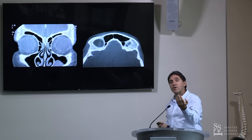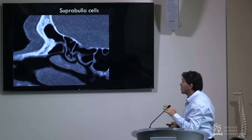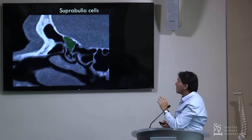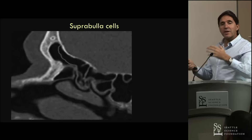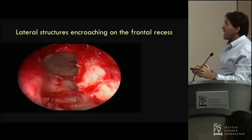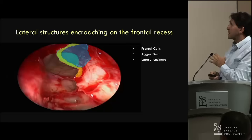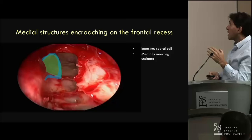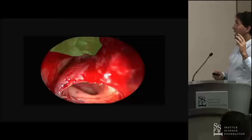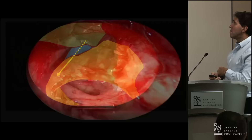The supraorbital ethmoid air cell pneumatizes from backwards to forwards, so your frontal drainage pathway is anterior to it - you need to be aware of that. The suprabullous cell: the bulla ethmoidalis attaches to the skull base. Your anterior ethmoid artery will be about there. Variable pneumatization can go up the skull base and as it pneumatizes up the skull base it can narrow that frontal drainage pathway and lead to problems. You need to be aware of it and remove the whole cell using through-cutting frontal instrumentation. The medial structures are really just an inter-sinus septal cell and the medially inserting uncinate process - very simple, easy to determine on your preoperative CT scan. Once you've identified those important structures and got your drainage pathway, remove all those structures out the way and you'll end up with a nice frontal recess.